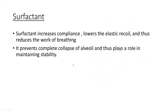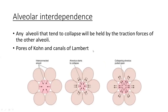Apart from compliance, the other properties that help maintain alveolar stability are surfactant production and alveolar interdependence. Surfactant increases compliance, lowers elastic recoil, reduces the work of breathing, and prevents complete collapse of the alveoli. The concept of alveolar interdependence: the alveoli are connected by the pores of Kohn and the canals of Lambert. When an alveolus tends to collapse, it is held open by traction forces from neighboring alveoli through these connections, so the alveoli act as a combined functional unit.